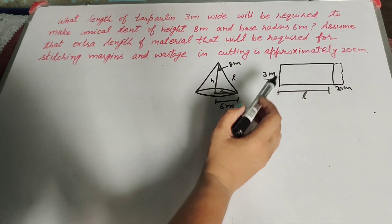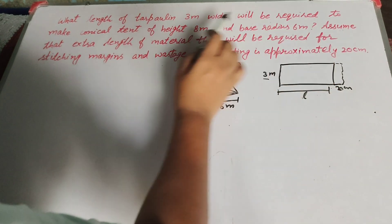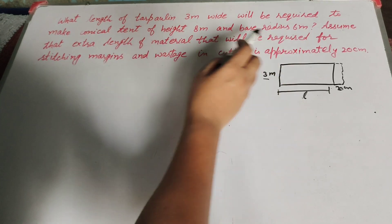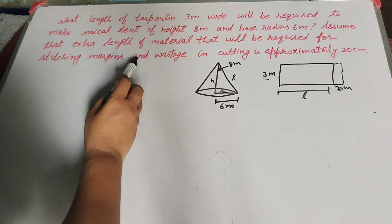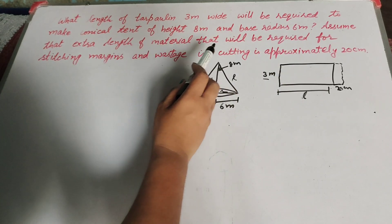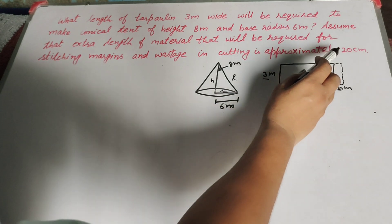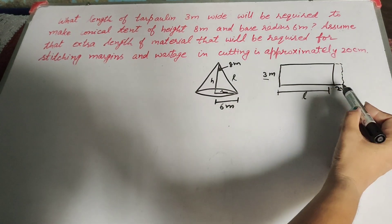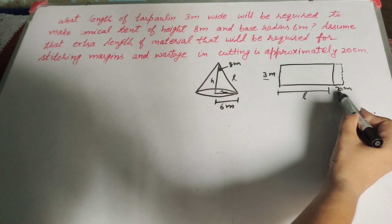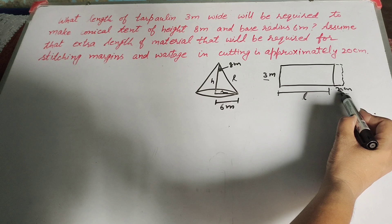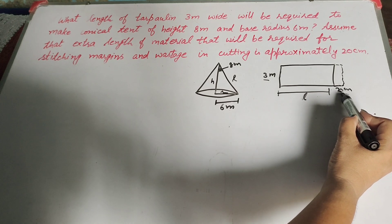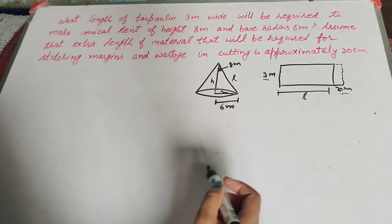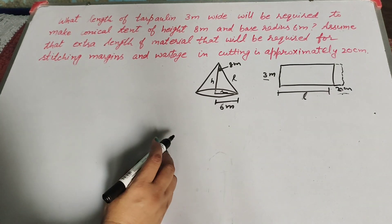Assume that extra length of the material that will be required for stitching margin and wastage in cutting is approximately 20 centimeter. This 20 centimeter length is used for stitching margin and the wastage of cutting.